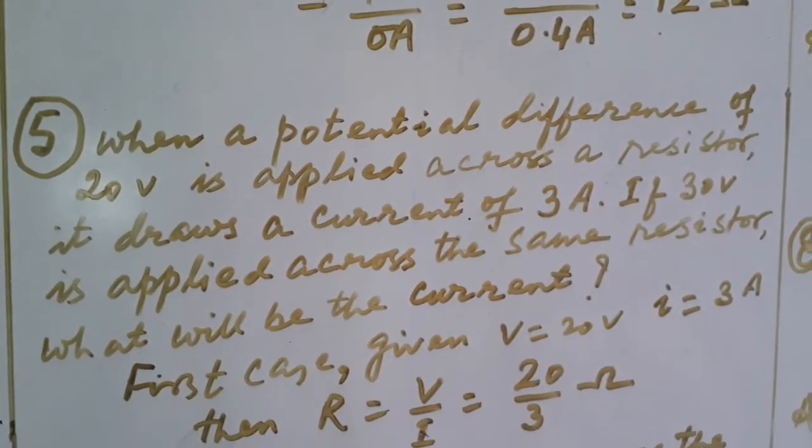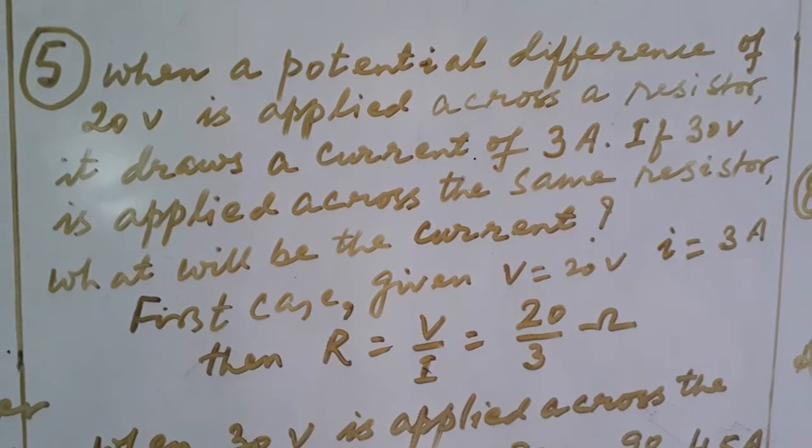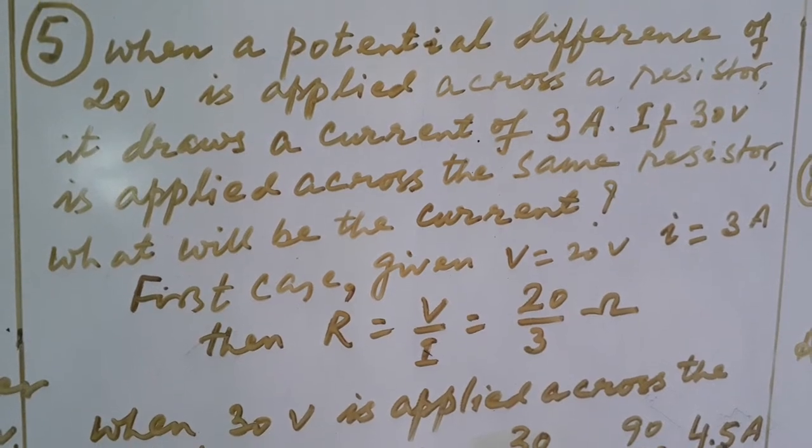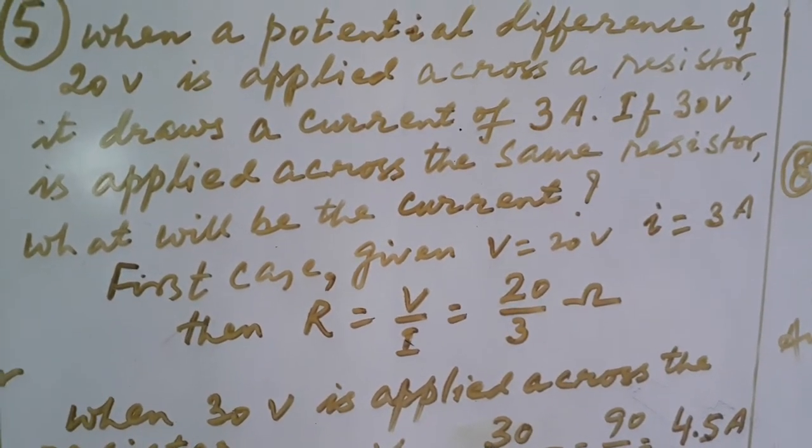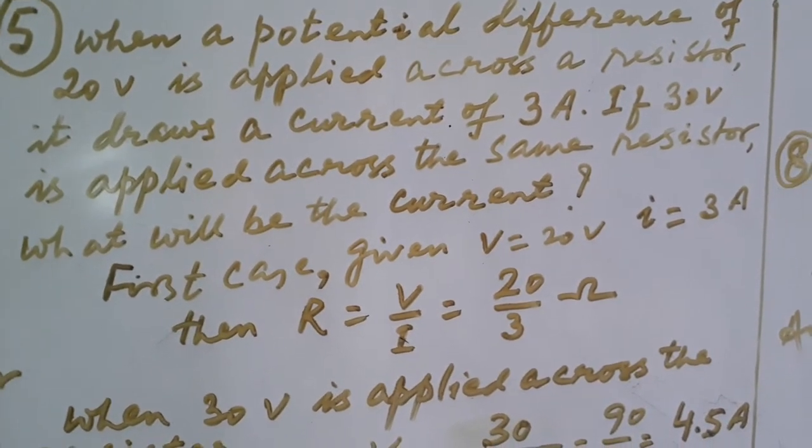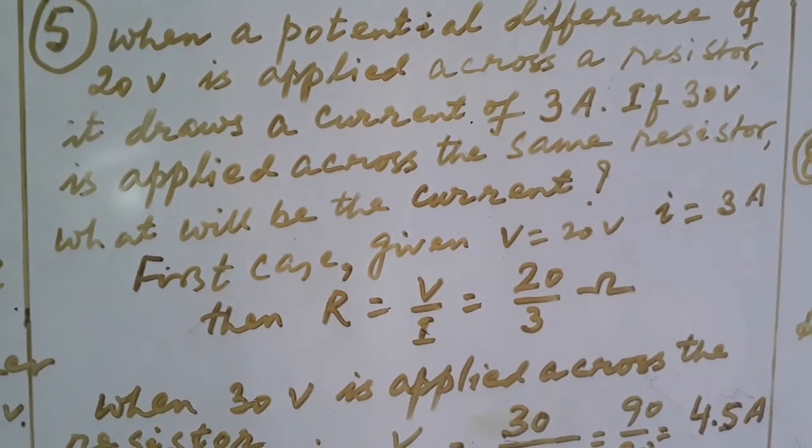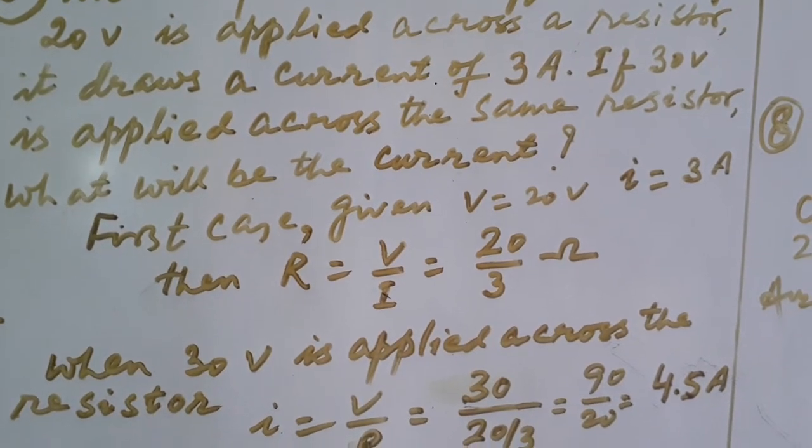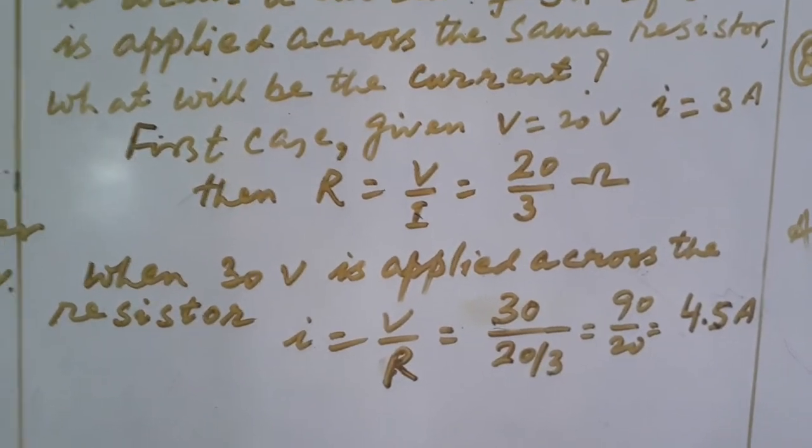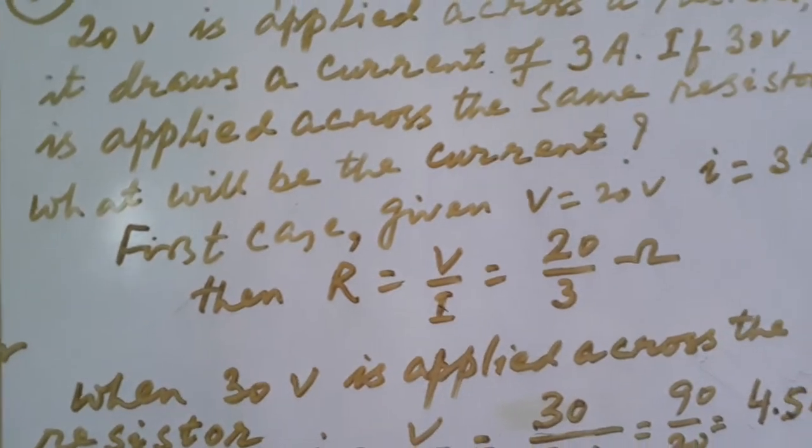Now in question number 5, when a potential difference of 20 volt is applied across a resistor, it draws a current of 3 ampere. If 30 volt is applied across the same resistor, what will be the current? In second case, you have to find the value of current. You know that current is written as V by R. In second case, 30 volt is given to you, that is value of V. You have to find the value of resistance, then you can easily solve the value of current in second case. Let us start with the first case.